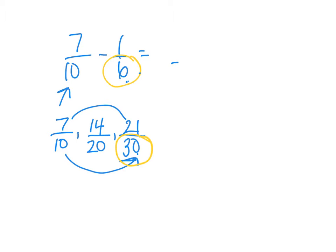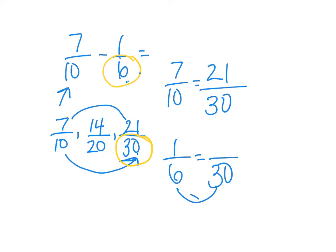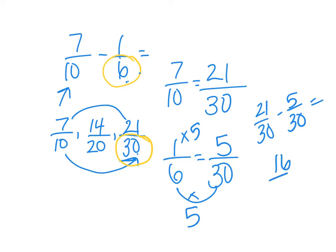Now we change the fractions: seven tenths equals twenty-one thirtieths. One sixth equals how many thirtieths? We multiplied by five to get thirty, so whatever you do to the bottom you do to the top — five thirtieths. Now we subtract: twenty-one thirtieths minus five thirtieths equals sixteen thirtieths. That's not in lowest terms, so divide both by two: sixteen divided by two is eight, thirty divided by two is fifteen. The answer is eight fifteenths.